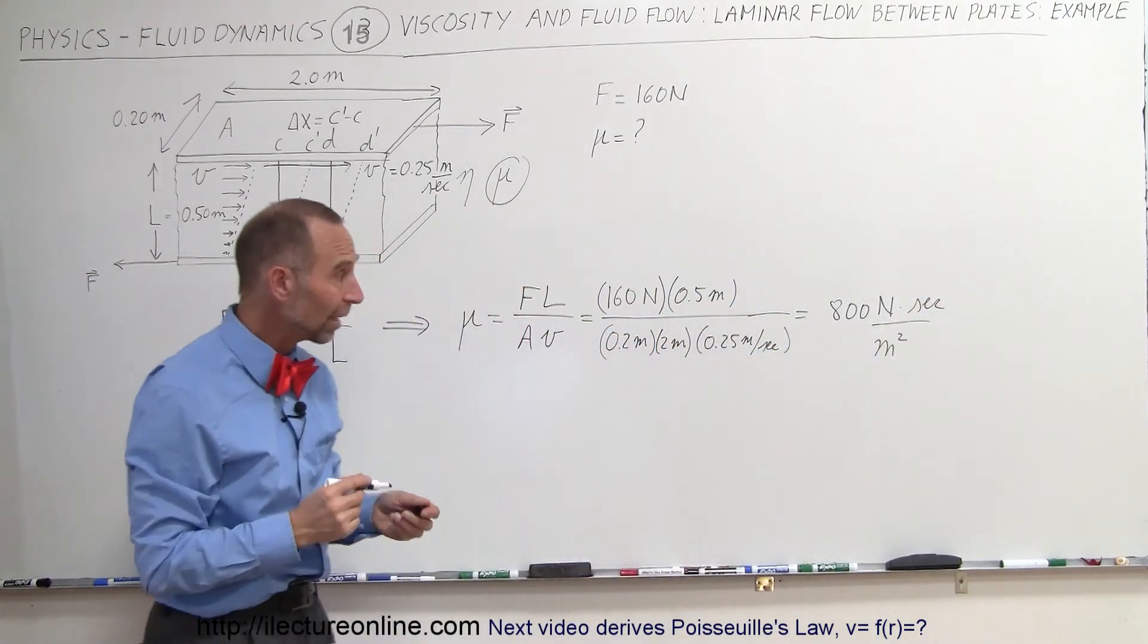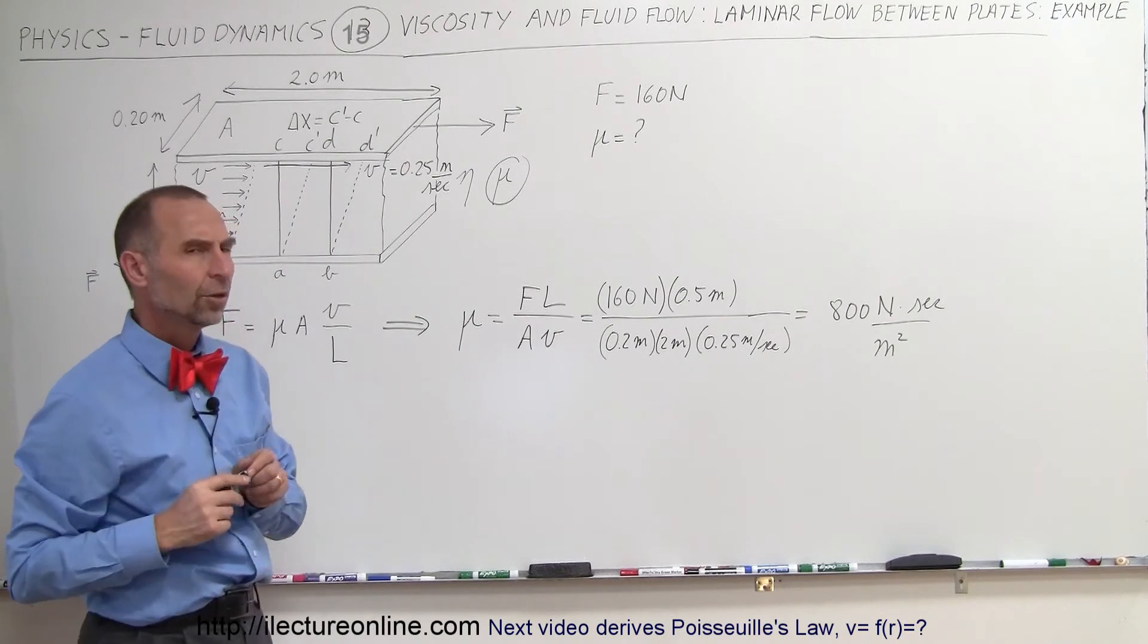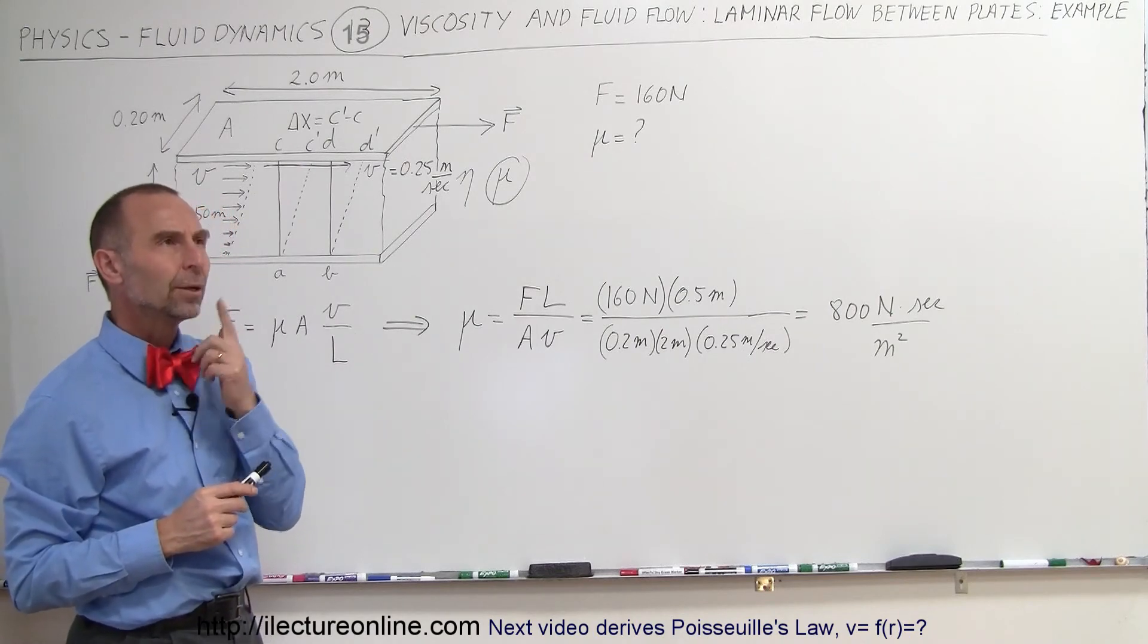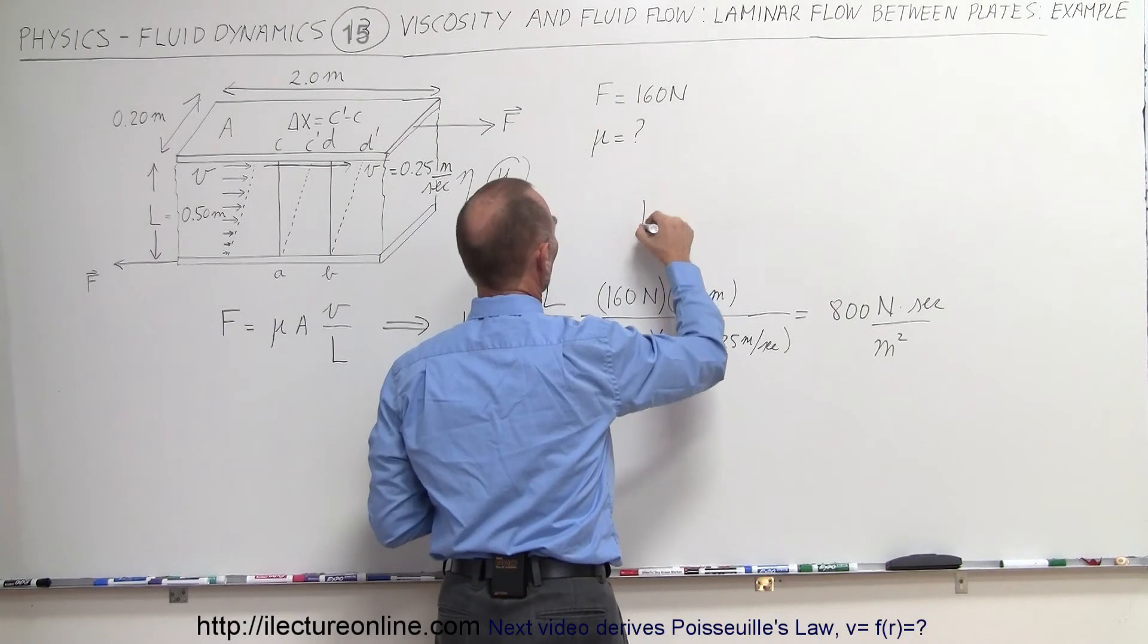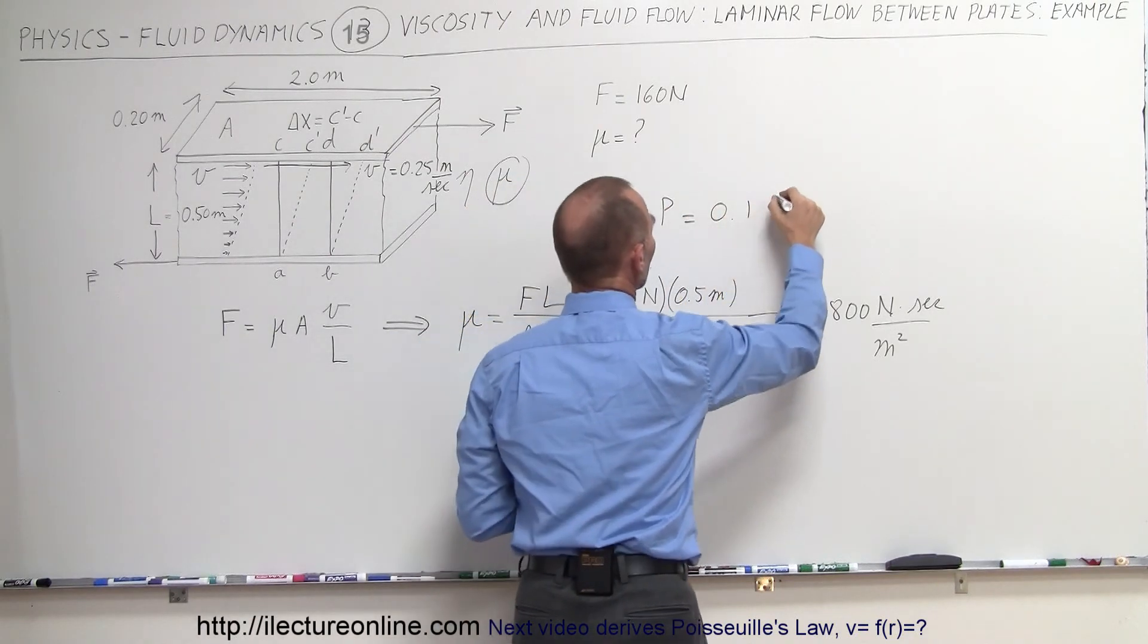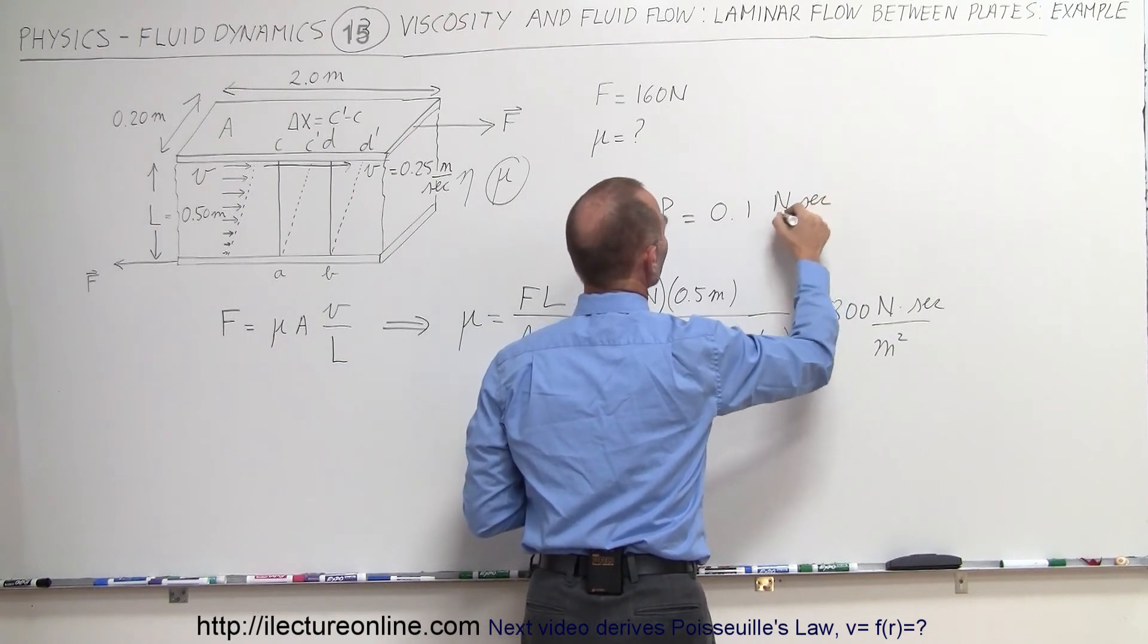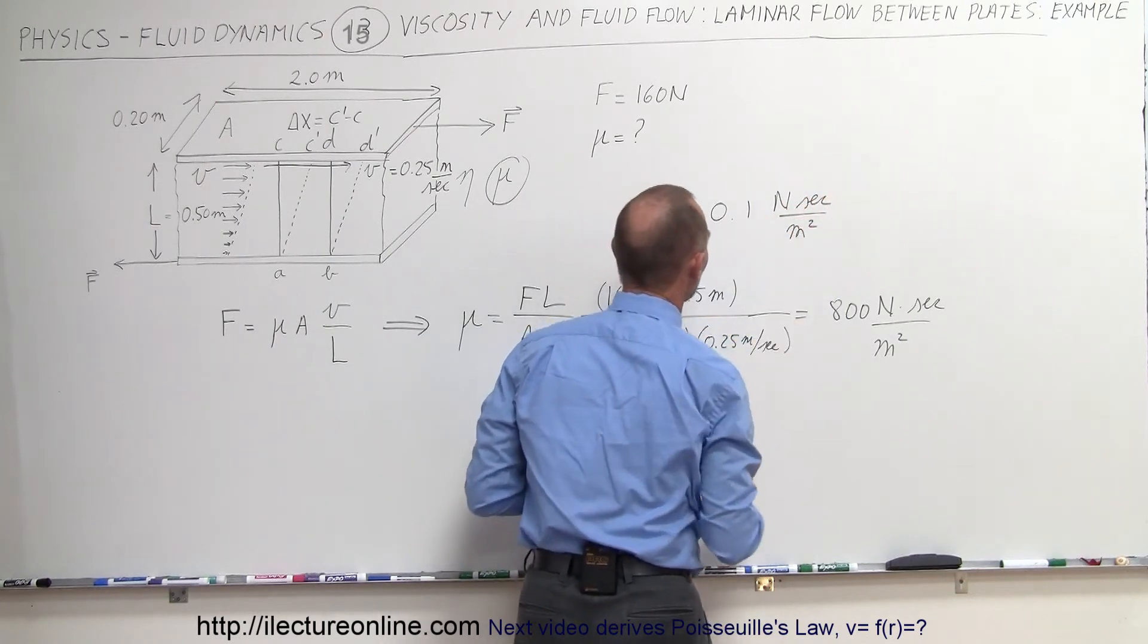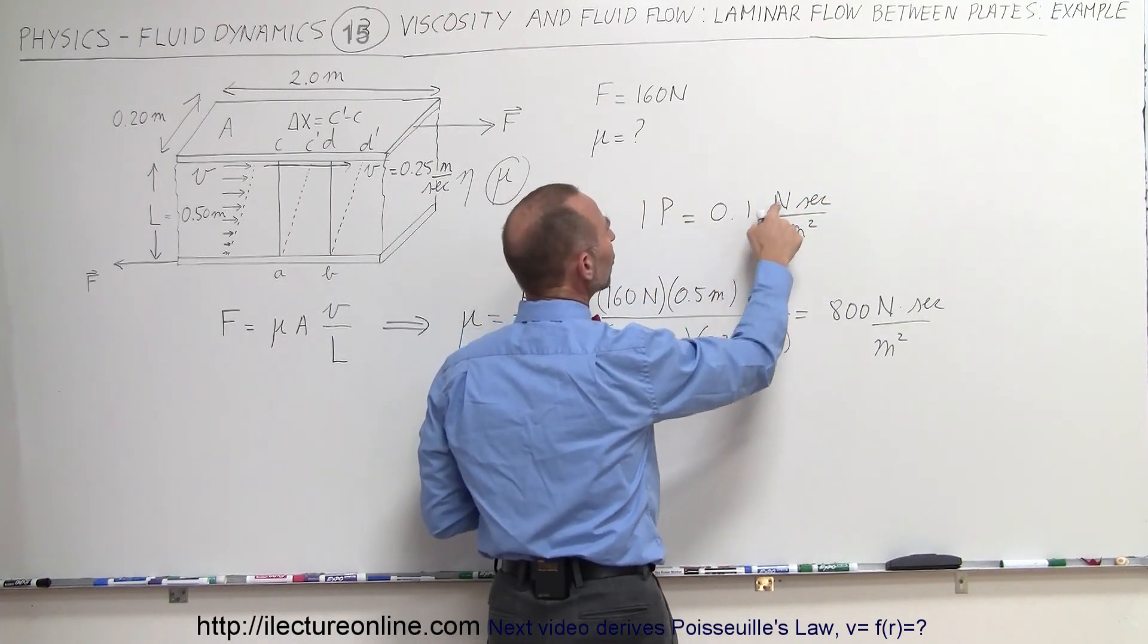How many poise is that? Well, it turns out that 1 poise is equal to 0.1 Newton-seconds per meter squared. So 1 Newton-second per meter squared is 10 poise.